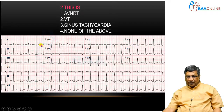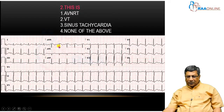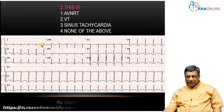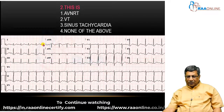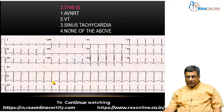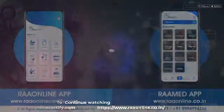Look at Lead 1 — the P wave is upright; in aVR it is inverted; in Lead 3 and V1 it is biphasic. The configuration, width, and duration of the P wave looks like sinus. Since every QRS is preceded by a P wave that looks like sinus, this is likely sinus tachycardia.